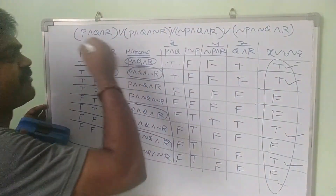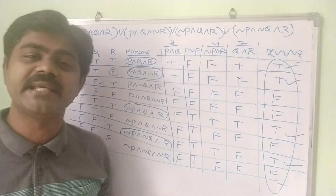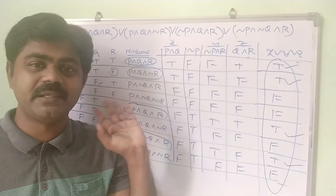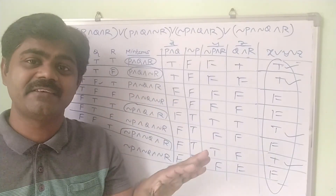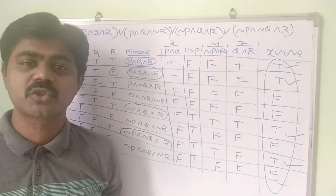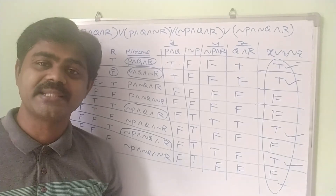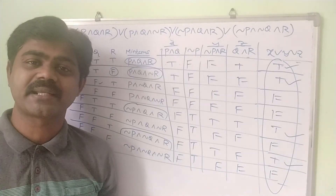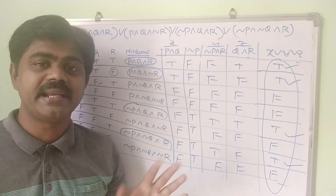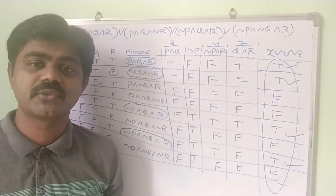This is the final Principal Disjunctive Normal Form. In PDNF, the true value's corresponding minterms are considered; in PCNF, we consider the false values. In the next class, we will discuss PDNF without a truth table, and then PCNF with and without a truth table.